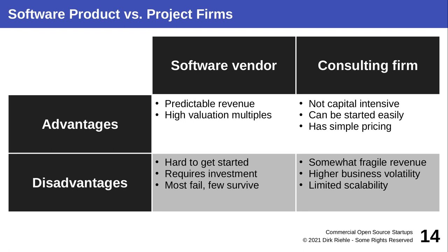If you're thinking about a startup, you need to understand the difference between these two forms of companies. A software vendor that has survived and thrives has comparatively predictable revenue, because established customers find it hard to stop using software that is ingrained in their business operations. So they don't lose customers quickly — there is churn, but you tend to keep customers — and that predictable revenue leads to high valuation multiples in the stock market.